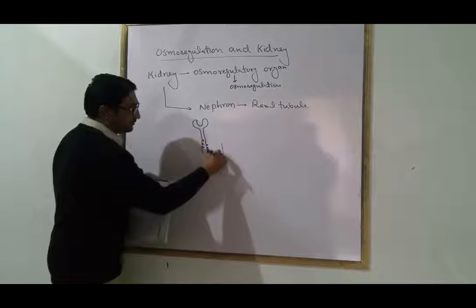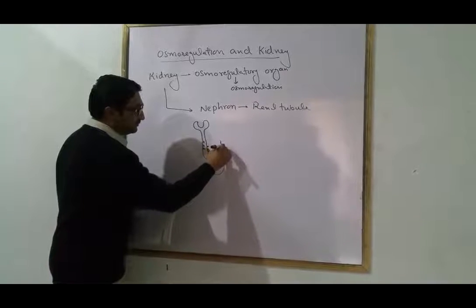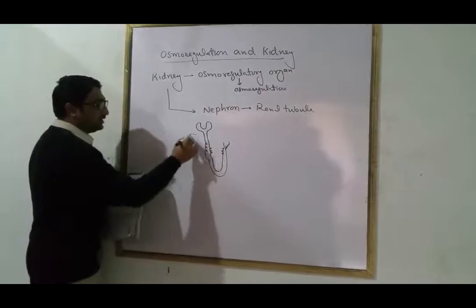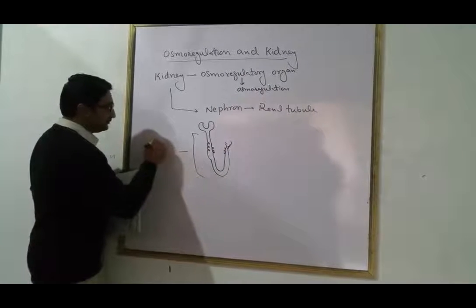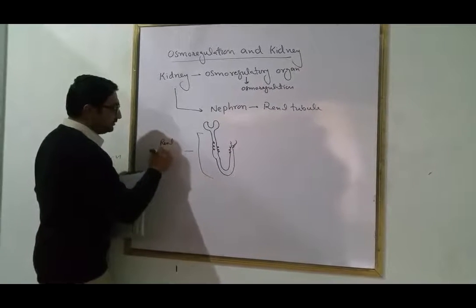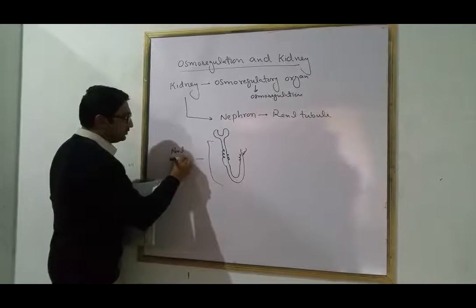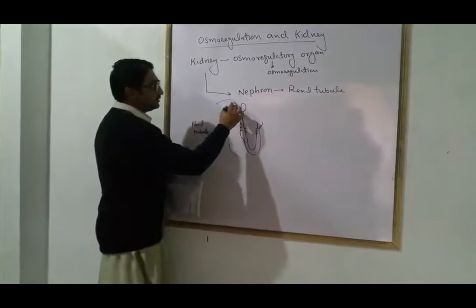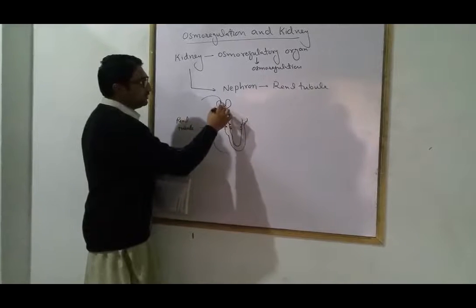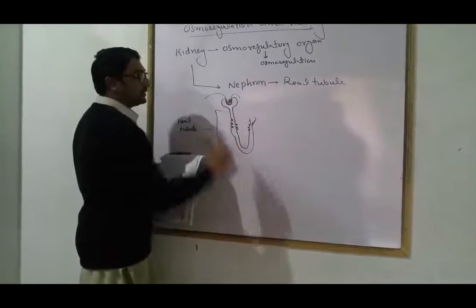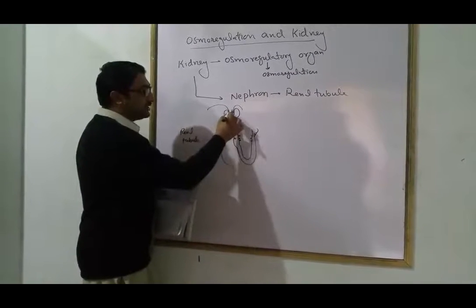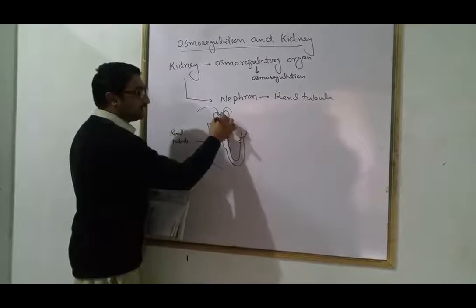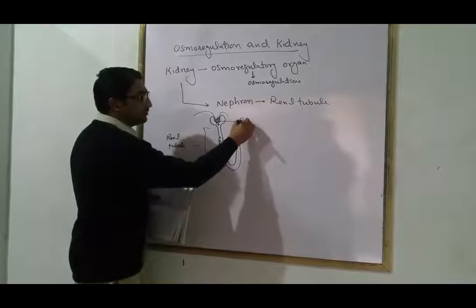The Glomerulus — the Glomerulus filters material that is not waste. This filtered material is called the filtrate. Scientists have found that 100% of the filtrate passes through the Glomerulus, but 99.5% of it is reabsorbed.